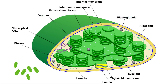Within the stroma are thylakoids, flattened sacs that stack to form grana, essential for photosynthesis. Ribosomes are present in both thylakoids and stroma for protein synthesis. Lamellae connect thylakoids and grana, aiding in efficient communication and transport between compartments. This complex structure optimises energy conversion and biochemical processes, supporting plant vitality.